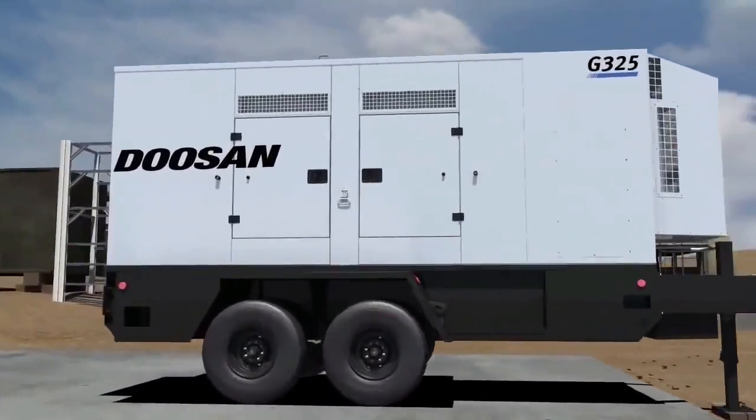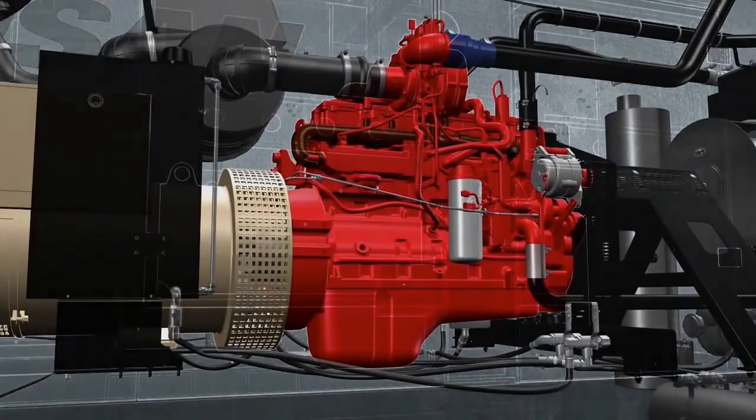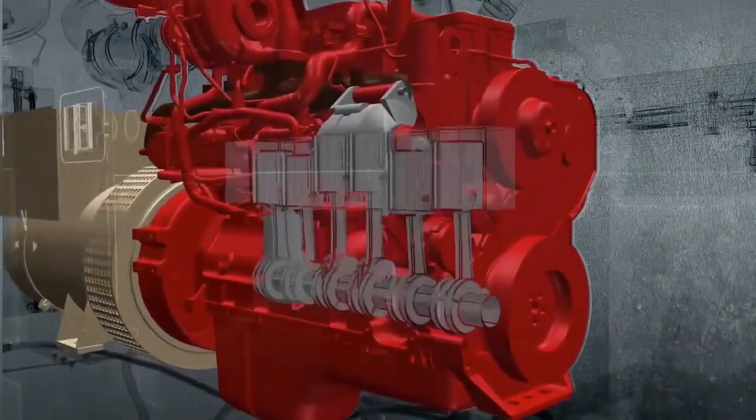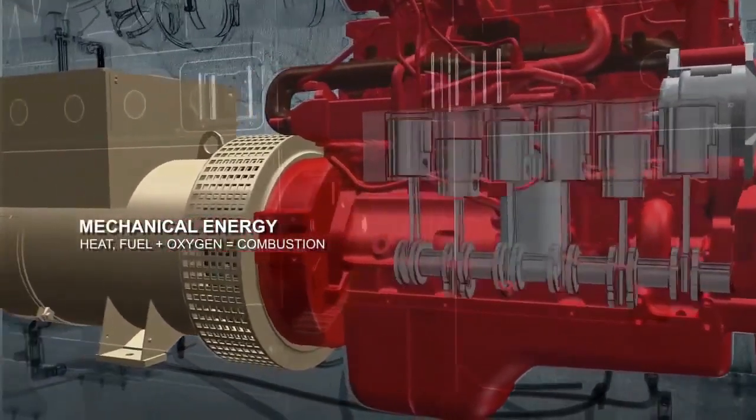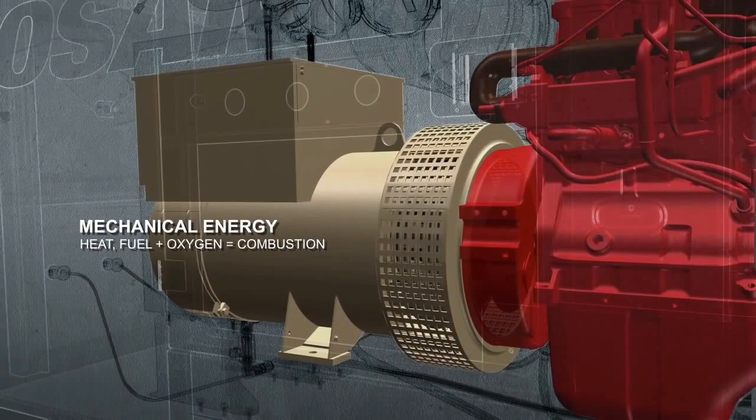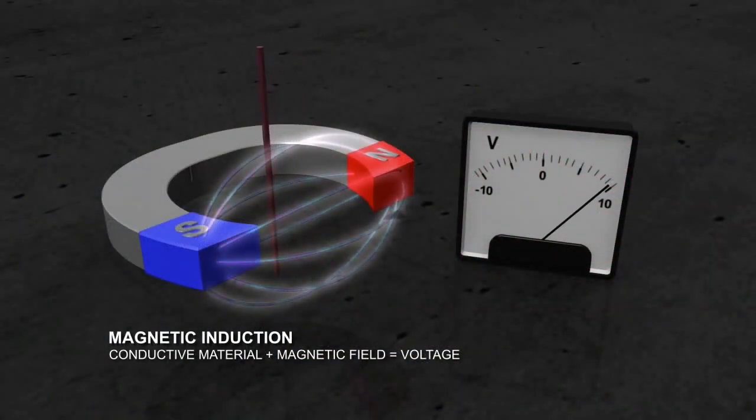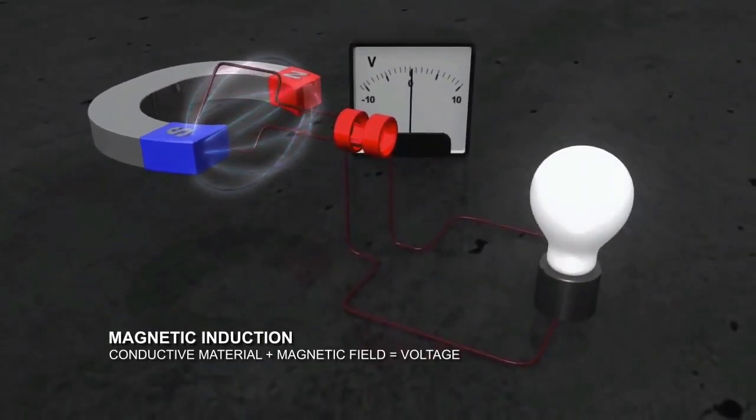A generator engine converts diesel fuel to mechanical energy that rotates the crankshaft. As combustion occurs in each cylinder, energy transmits to the engine crankshaft, which generates mechanical power for the alternator. An alternator converts mechanical power into electrical energy in a process called magnetic induction. Magnetic induction occurs when a conductive material, such as a copper wire, passes through a magnetic field and voltage is produced. If the wire is connected in a complete circuit, the power can be transmitted.